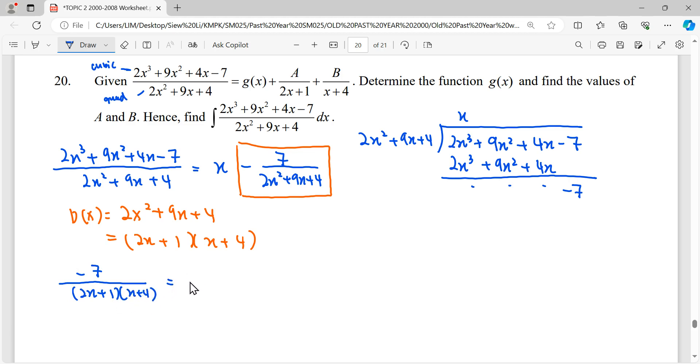Only can split according to the factor. The first factor is 2x plus 1, the second factor is x plus 4. Then we denote the linear factor at the denominator, up here will be constant A.